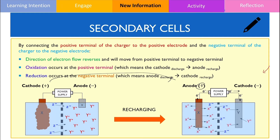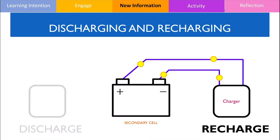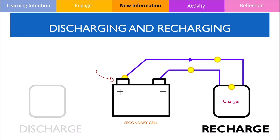I will now explain these processes again using a different illustration. When the secondary cell acts as a galvanic cell, the cathode is the positively charged electrode and the anode is the negatively charged electrode. When it discharges, electrons flow from the negatively charged anode to the positively charged cathode. However, when the cell recharges, the direction of electron flow is reversed, meaning electrons move from the positive to negative electrode. Since electrons are now being lost at the positive electrode, this electrode is now the anode, and the negatively charged electrode is now the cathode because it gains electrons.